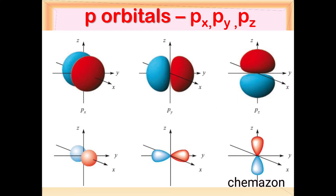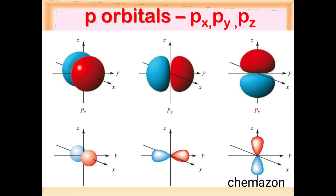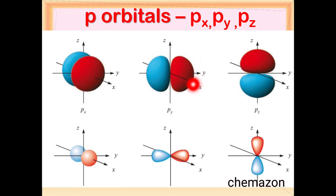A very important point to note is that both lobes of the P orbitals are of different phase — that is, if one lobe is positive phase then the other one will be negative, or the other way round if one is negative the other will be positive. So both lobes of the P orbital are of opposite phase.